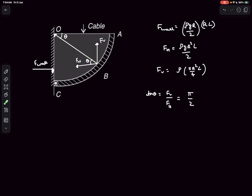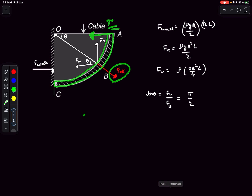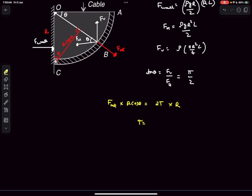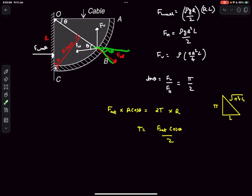The force the plate applies on the fluid passes through O. The force the fluid applies on the plate, F_net, is just the opposite. The forces on the plate are F_net and the cable tension. The atmospheric pressure terms cancel, so only these provide useful torque. The perpendicular distance from point C to the line of action is r·cos θ. Balancing torques: F_net × r·cos θ = 2T × r, where the factor of 2 accounts for the two cables. Since F_net·cos θ is just the horizontal component FH, the final answer is T = FH/2.